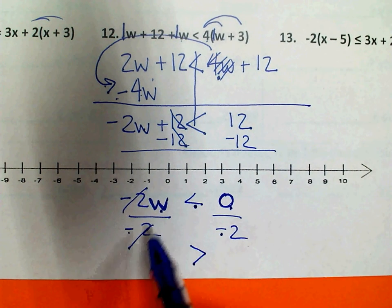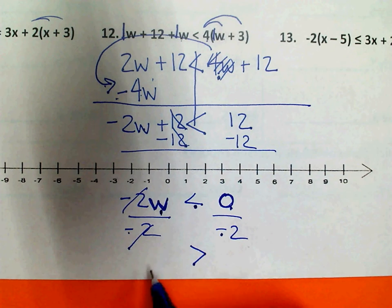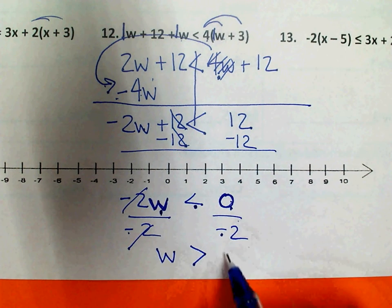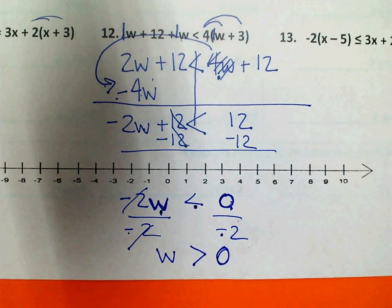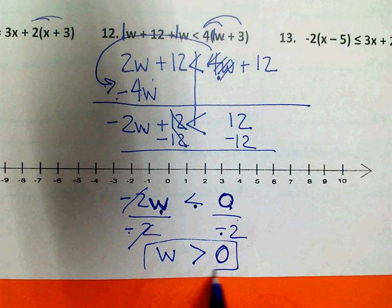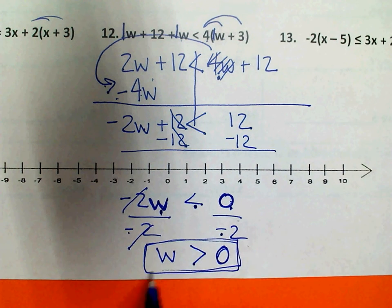These cancel, so all I have left here is W. And 0 divided by negative 2 is just 0. So here's my solution for W. W is greater than 0.